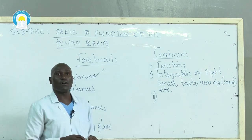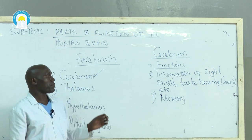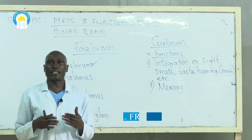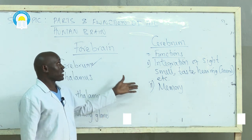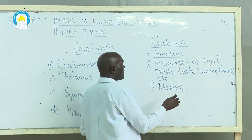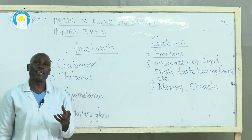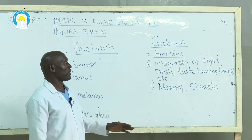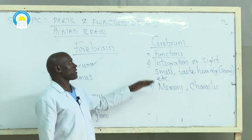Cerebrum is also responsible for memory — it enables an individual to remember something they had seen before or learned about before. The ability to remember anything one had come across is a function of the cerebrum. Cerebrum is also responsible for an individual's character, which is mainly developed within the cerebrum.